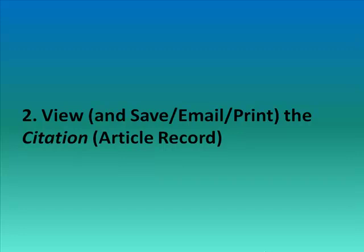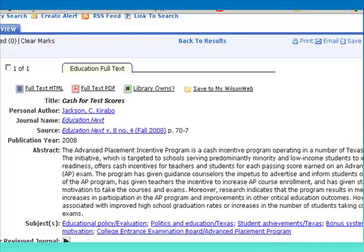You need to make sure you get the complete information about the article to write your citation. It is very important to print, email, or save the article record before leaving the database in which you have found your articles. If you only print, email, or save the full text article, you may not have all of your needed information for the citation entry in your MLA Works Cited page. Each database may have a slightly different method for printing citations in full text, so just be sure that you have both when you have retrieved your chosen articles.